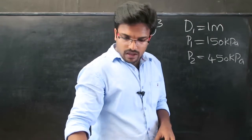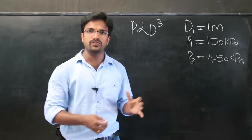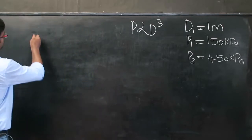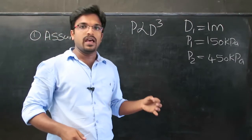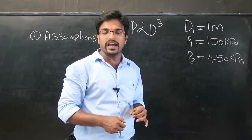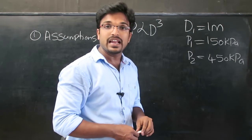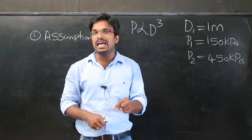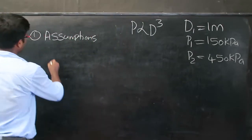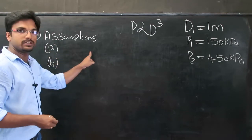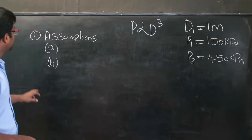Since we are treating this like a descriptive examination such as engineering service or civil service, we follow proper procedure. First, we state our assumptions: the process is reversible, and it is a closed system. Both assumptions are necessary in order to use the expansion work equation W = ∫P dV.